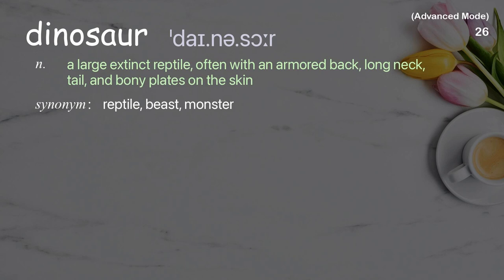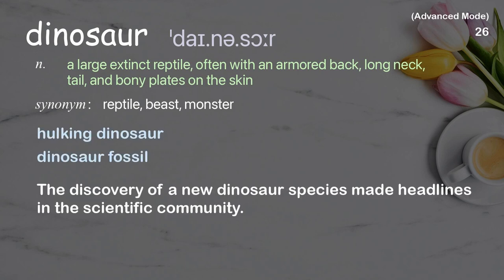Dinosaur: A large extinct reptile, often with an armored back, long neck, tail, and bony plates on the skin. Examples: hulking dinosaur, dinosaur fossil. The discovery of a new dinosaur species made headlines in the scientific community.